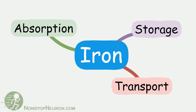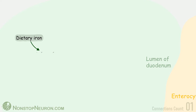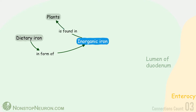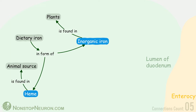Hey guys, in this video we will make a concept map of absorption, transport and storage of iron. Let's get started. Dietary iron is in two forms: inorganic iron, which is found in plants, and heme, which is found in animal sources.